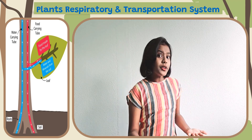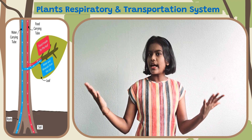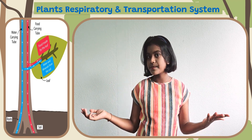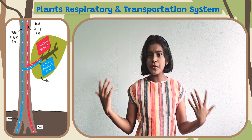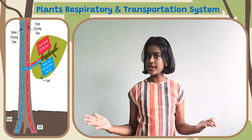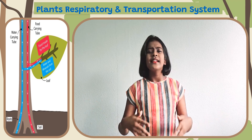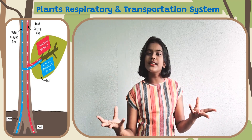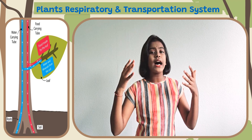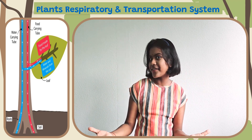The food and water are transported throughout the plant using food and water carrying tubes. The leaves make food and transport it through the food carrying tubes to the other parts of the plant. The roots absorb water and minerals and transport it to the other parts of the plant using water carrying tubes.